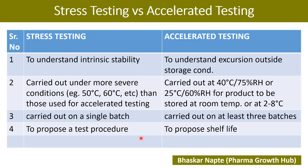Accelerated testing, on the other hand, is conducted to propose the shelf life of the product. There is a guideline available in ICH — Q1E — which covers estimation of shelf life for drug substances or drug products. According to that guideline, if you have six months of accelerated data, you can extrapolate to propose a shelf life. So accelerated testing is actually helping in proposing the shelf life.